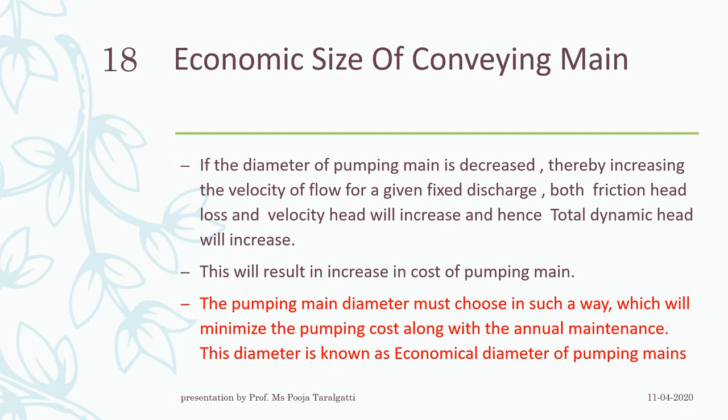We need to consider the cost of installation and the complete cost of transporting water. So the pumping main diameter must be chosen in such a way that it minimizes the pumping cost along with the annual maintenance cost. This type of diameter calculation is known as the economical diameter of the pumping main.